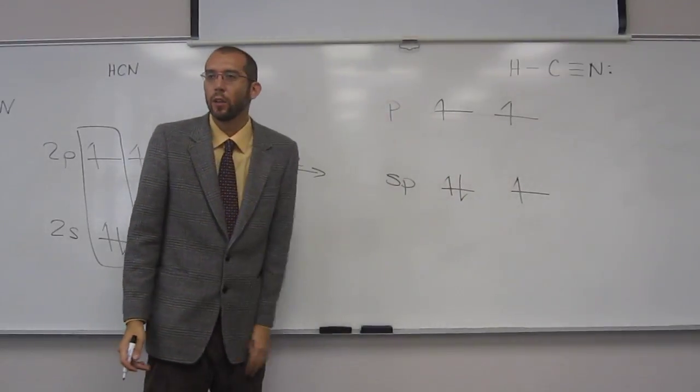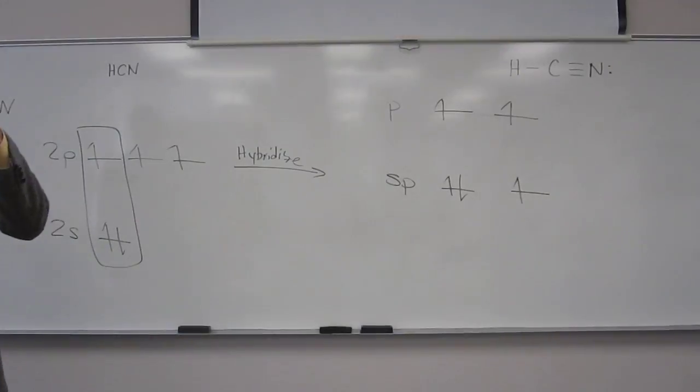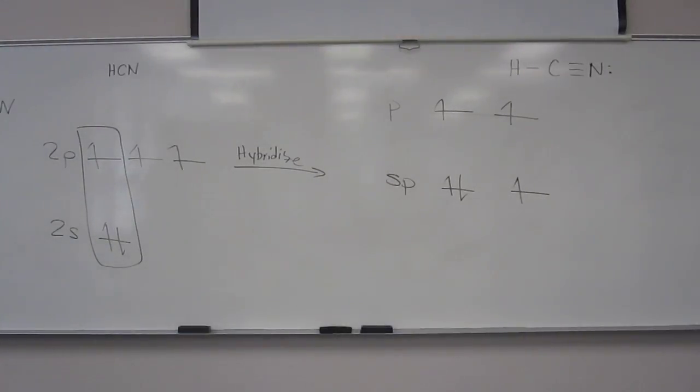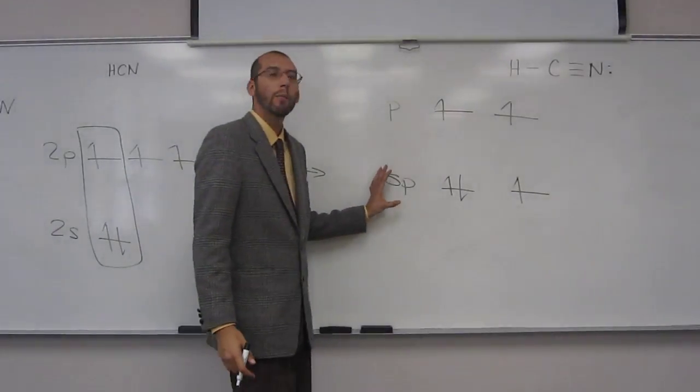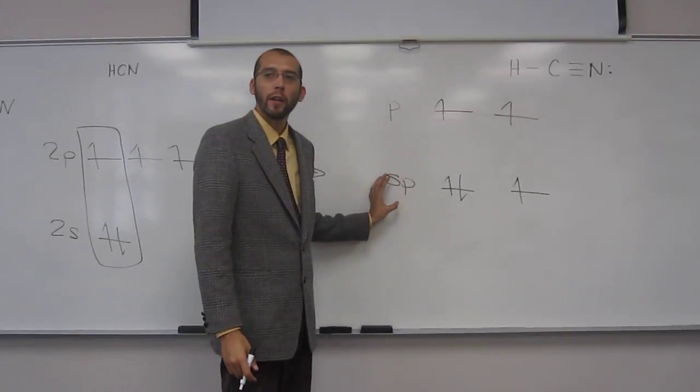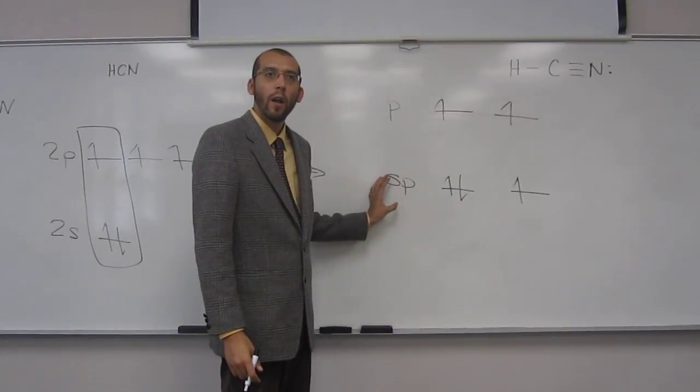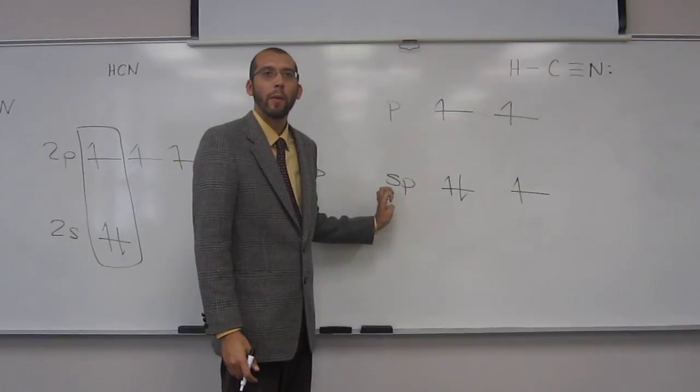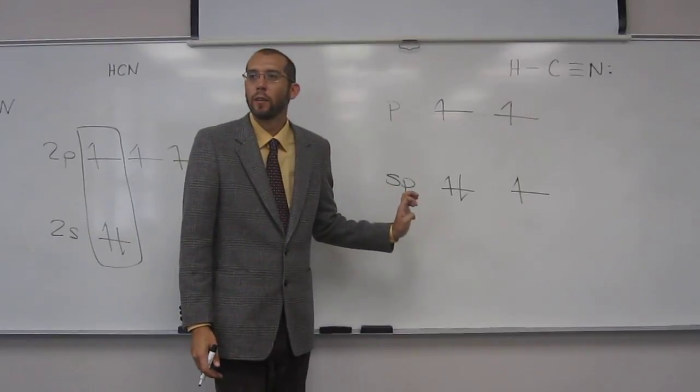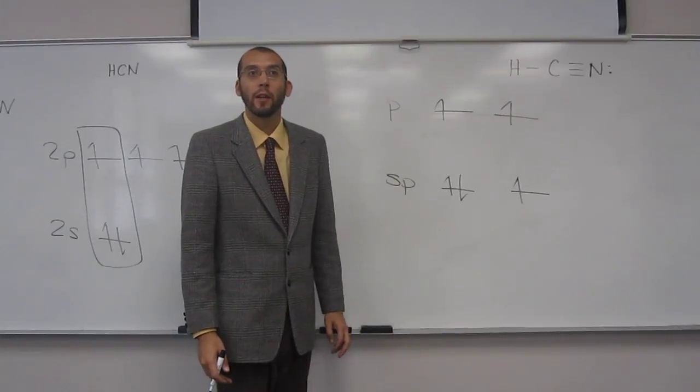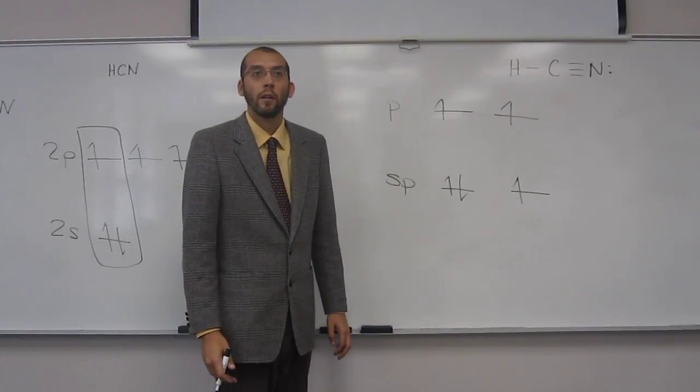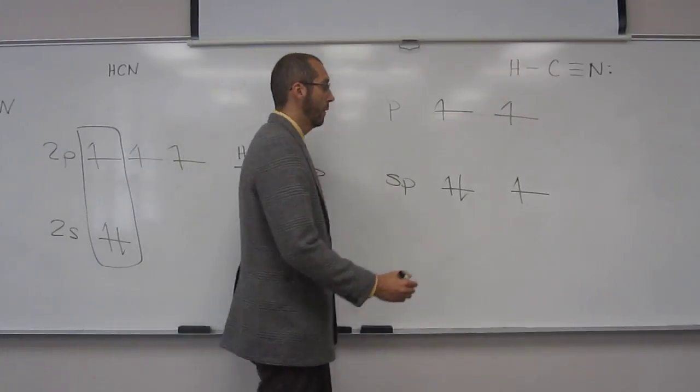These are relatively close in energy. I know we're drawing them far apart. So if you look at this, how many sp bonds should nitrogen be able to make? One. One. Does it make one sp bond? Yeah. With what? Carbon. The carbon, right? What orbital in carbon is it making it with? The sp orbital in carbon, right?